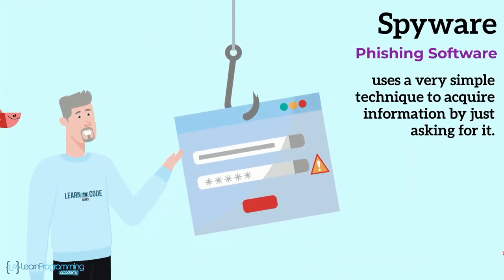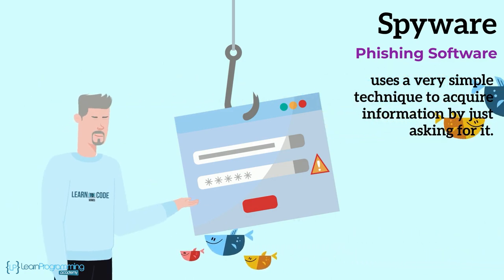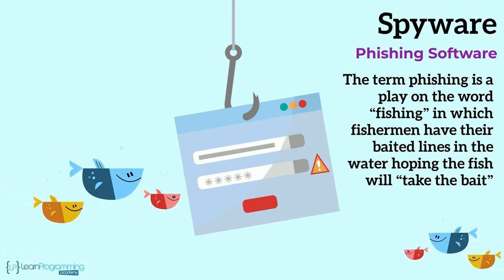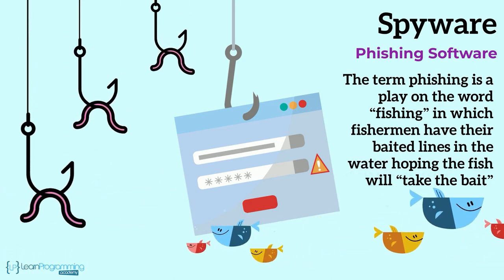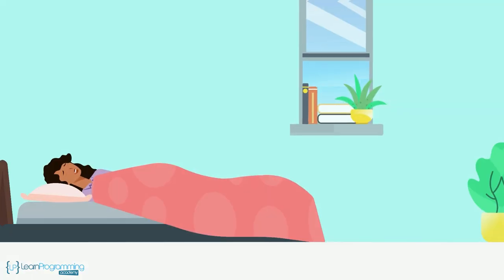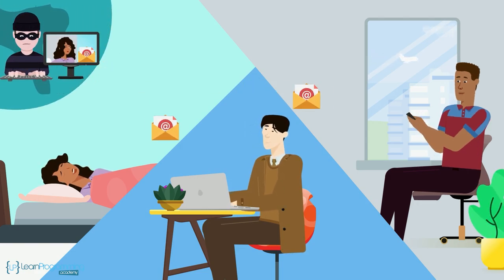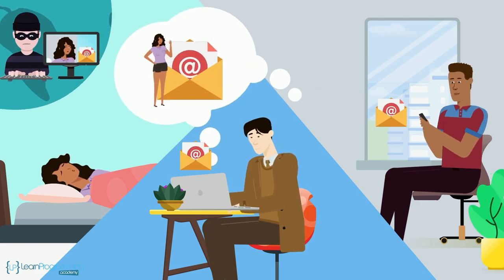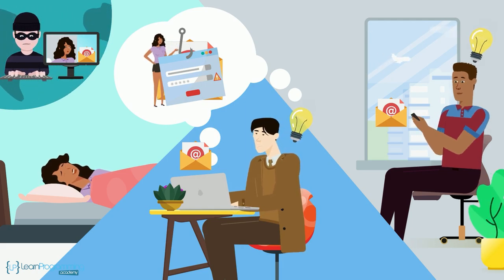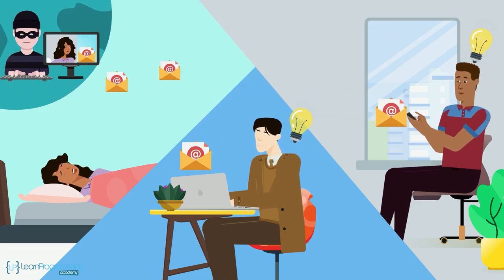Phishing software uses a very simple technique to acquire information by just asking for it. The term phishing is a play on the word fishing, in which fishermen have their baited lines in the water hoping the fish will take the bait. For example, something that happens very often is: friends in your email address book get sent an email that looks like it's from you, asking for specific information such as a username and password. We think it's really our friend, so we take the bait and reply with the information that was requested.